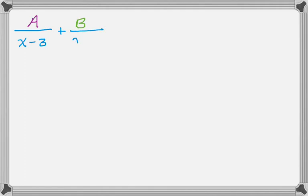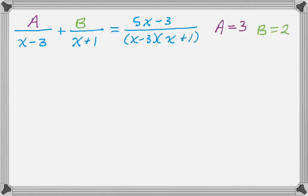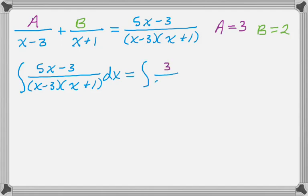We know the values of A and B, so we can actually rewrite our fraction, the integrand, using those. So A we worked out to be 3, and B is 2. So the integral that we were originally intending to do, which we weren't able to do in its given form, can be rewritten as this integral, which we can definitely do because it's just a pair of natural logs.